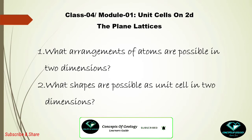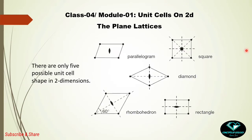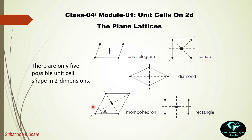At the very beginning, let me clearly state that there are only five possible unit cell shapes in two dimensions — not more than five. They are: parallelogram, square, diamond, rhombus, and rectangle. You may ask what is the difference between a diamond and a rhombus — in both cases they are an elongated square, but we use the term rhombus only when the interfacial angle is 60 degrees; otherwise we call it a diamond.